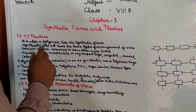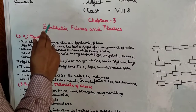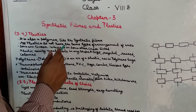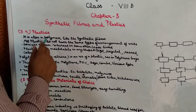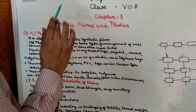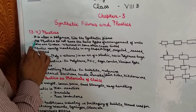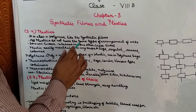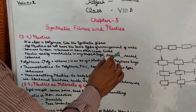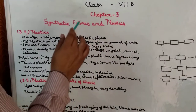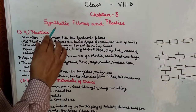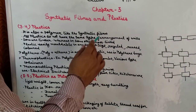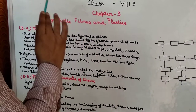Synthetic fiber की तरह plastic भी polymer ही होता है — same type units से बना होता है. बहुत सारी same type units आपस में combine होकर polymer का निर्माण करती हैं. दूसरा point है: all plastics do not have the same type of arrangement of units, यानि कि सभी plastics में जो unit होती हैं उनका arrangement एक जैसा नहीं होता.